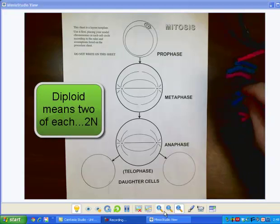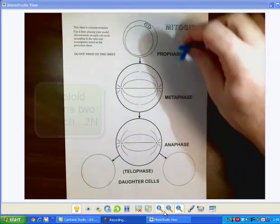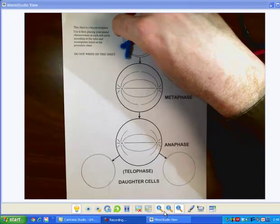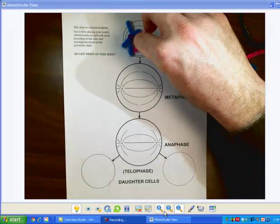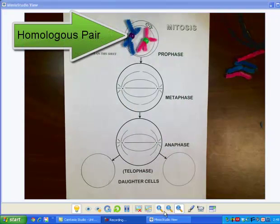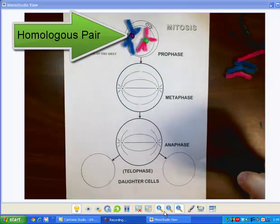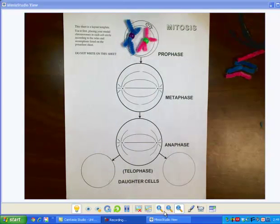We're going to assume that we've already gone through the G1, S, and G2 phase and we're starting right here at prophase of mitosis. We'll have these two homologous pairs of fibers. In prophase, the nucleus divides or goes away and we enter into metaphase.